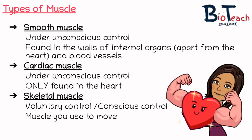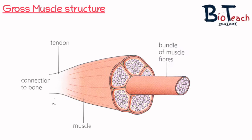The second type of muscle is cardiac muscle, and this is again under unconscious control. When I say unconscious control, I simply mean that we don't have to tell it to work. Cardiac muscle is only found in the heart. The third type of muscle — and this is the muscle you'll get asked about in unit one — is skeletal muscle, and this is under voluntary control. This is the muscle that we use to move, and what you need to know about it is its structure and its function.